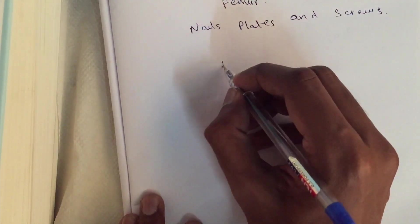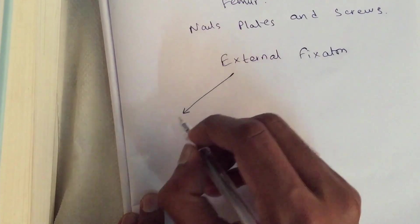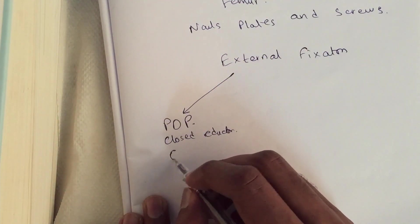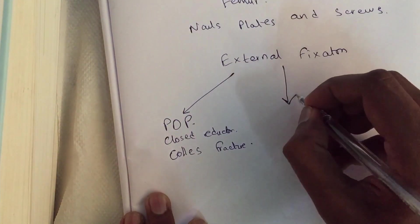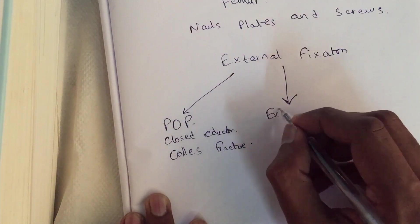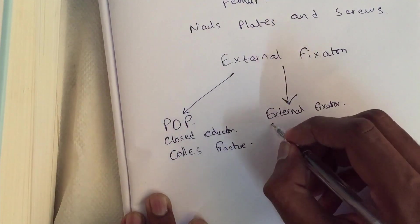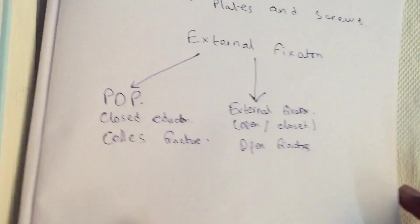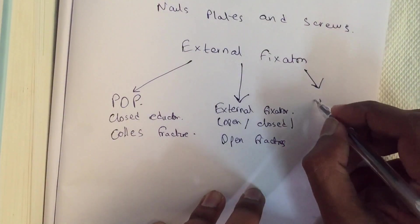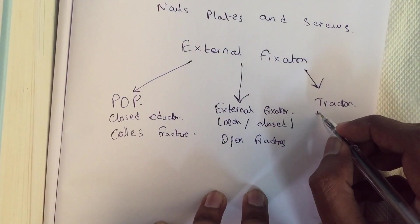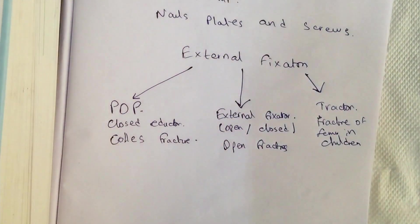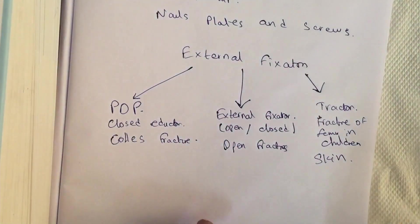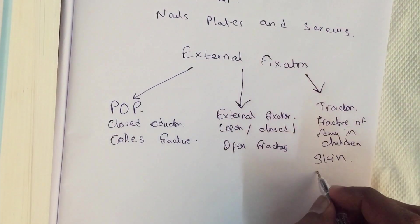The second method of retention is by external fixation. This can be done using plaster of Paris, which is a form of closed reduction — for example, for Colles' fracture. External fixation can also be done using an external fixator, by either open or closed reduction, for example in open fractures. The third method of external fixation is by using traction, usually done for fracture of femur in children. In adults, if a weight of less than 5 kilos is required, skin traction can be used; if greater than 5 kilos is required, skeletal traction can be used.